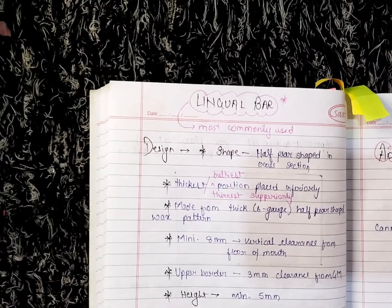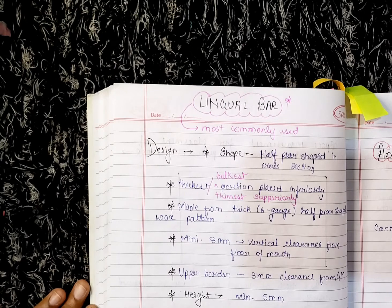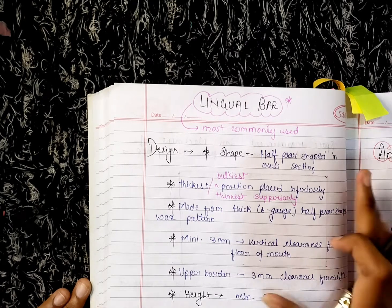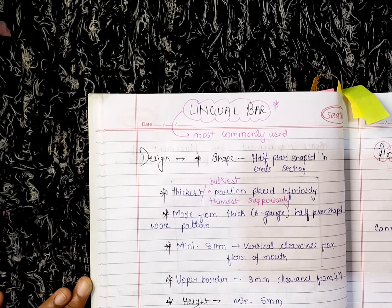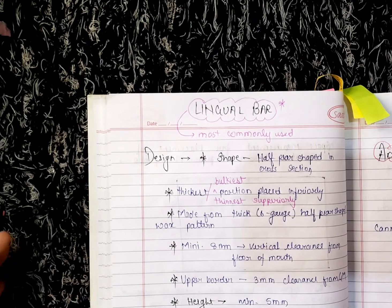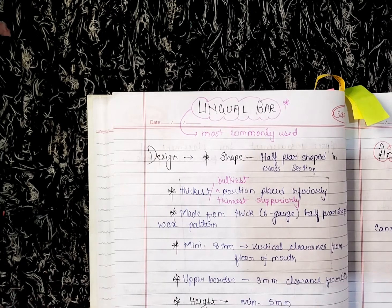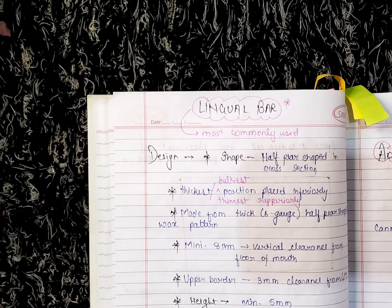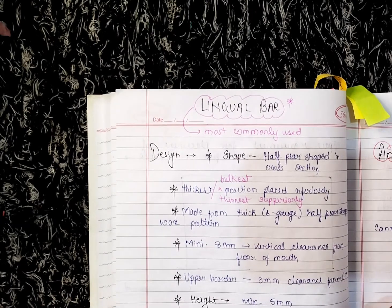It is made up of a thick six-gauge half-pear shaped wax pattern. The minimum depth and vertical clearance from the floor of the mouth is eight mm. The upper border should have three mm clearance from the gingival margin.